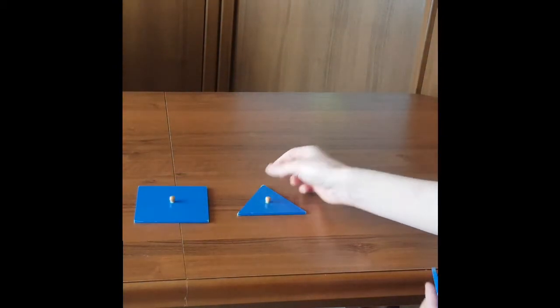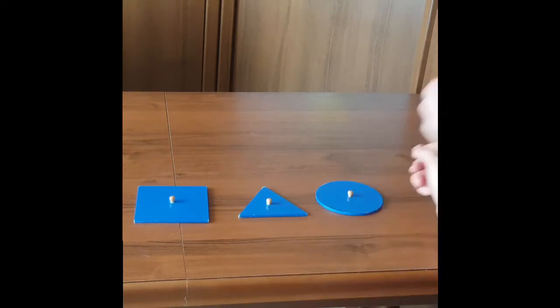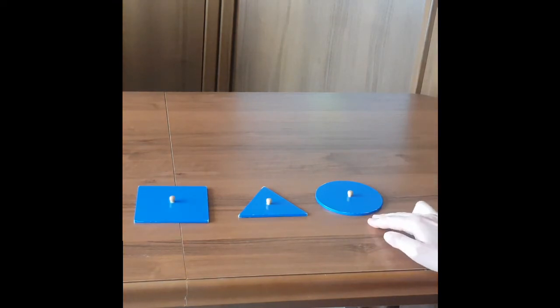Triangle is here. Where is square? Square is here. Where is circle? This is circle. Where is square? Where is triangle? And close your eyes now.